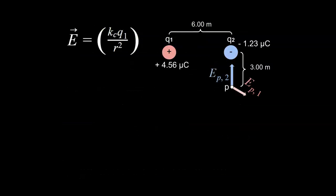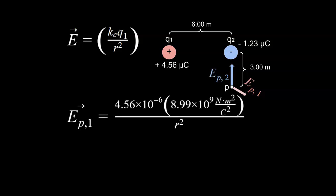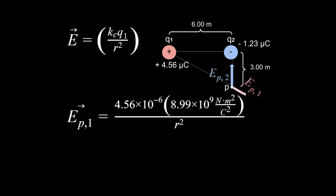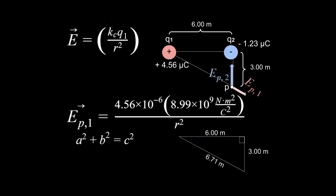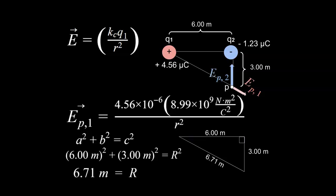Going back to the diagram, we want to solve for the electric field at point P from Q1. We work with the equation and immediately run into a roadblock: we don't know what our r value is — the distance between Q1 and P. But this is a right triangle: one leg is 6 meters, the other is 3 meters, so we use the Pythagorean theorem and get r = 6.71 meters.